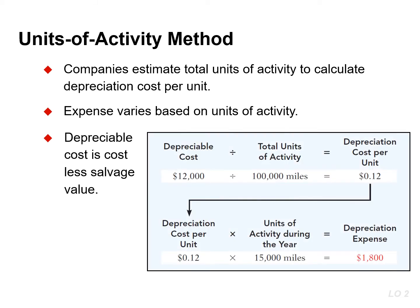In this example, the depreciable cost is $12,000, and that is found by taking the cost of $13,000 and subtracting the salvage value of $1,000. The estimated useful life of this asset is 100,000 miles, so the depreciation cost per unit is $0.12.